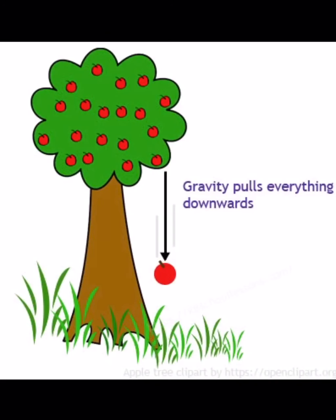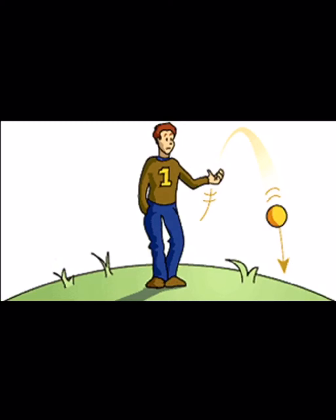Gravity pulls everything towards the ground. This is the meaning of gravity. That's why we do not fall down — even as you know, the Earth goes around itself. Why do we not fall down? Because of gravity — it pulls everything towards the ground. This man tried to throw this bowl up, but it did not go up, it fell down. Why? Because of gravity.